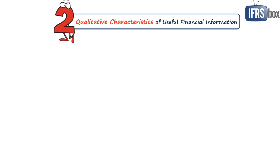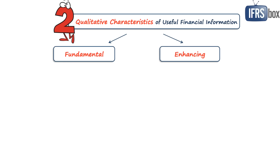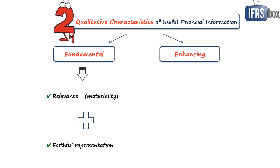Chapter 2 discusses qualitative characteristics of financial information so that the information is really useful for its users. There are two types: fundamental and enhancing. The first fundamental characteristic is relevance — relevant financial information is capable of making a difference in the decisions made by users, and the concept of materiality applies, so material information should not be omitted. The second fundamental characteristic is faithful representation: financial information must be complete, neutral and free from error. Financial information shall have both fundamental characteristics.